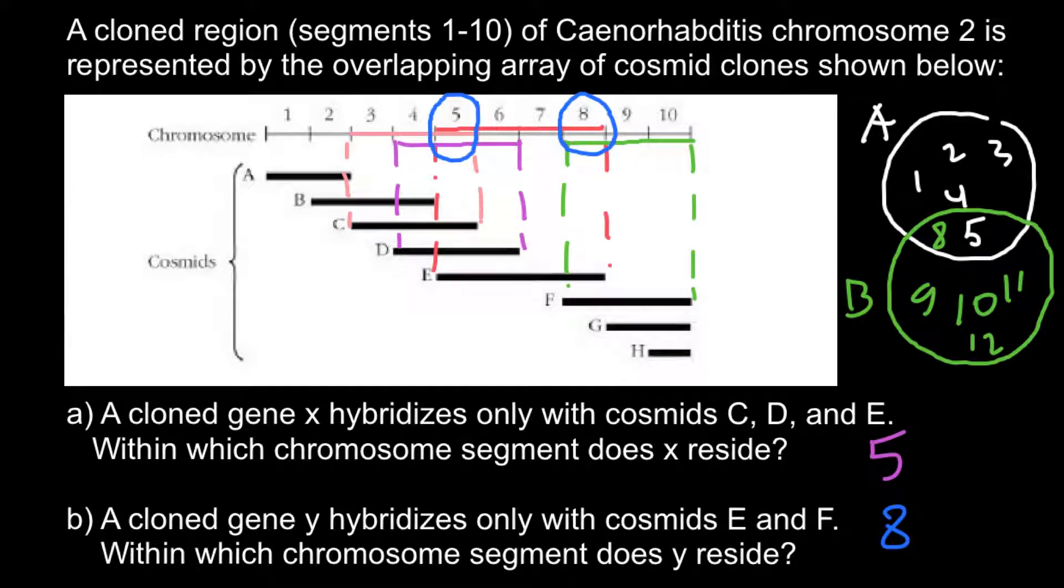So basically, it is like adding a third circle here, and now we have found this area that belongs to all three circles.